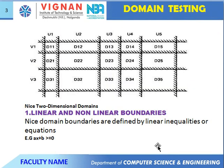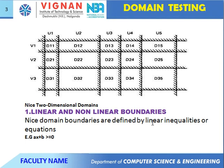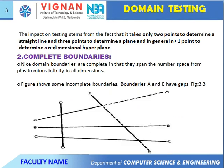First: linear and nonlinear boundaries. Domain boundaries are defined by linear inequalities or equations — for example, AX plus B greater than or equal to zero. The impact on testing comes from the fact that it takes only two points to determine a straight line, three points to determine a plane, and generally N plus one points to determine an N-dimensional hyperplane. These are called the linear and nonlinear boundaries.